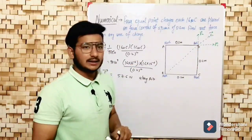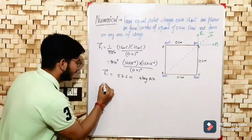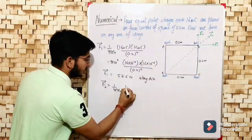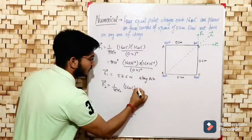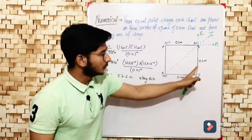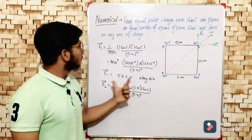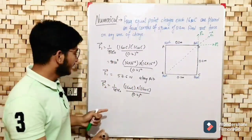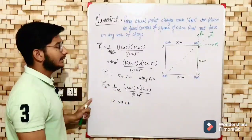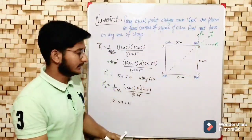Similarly, we now calculate F2, which is the force that charge C exerts on D. F2 vector equals 1/4πε₀ times the product of both charges — 16 microcoulombs into 16 microcoulombs — divided by the distance squared, (0.2)². This is exactly equal to F1, so F2 is also 57.6 Newton and its direction is along CD, acting from C towards D.